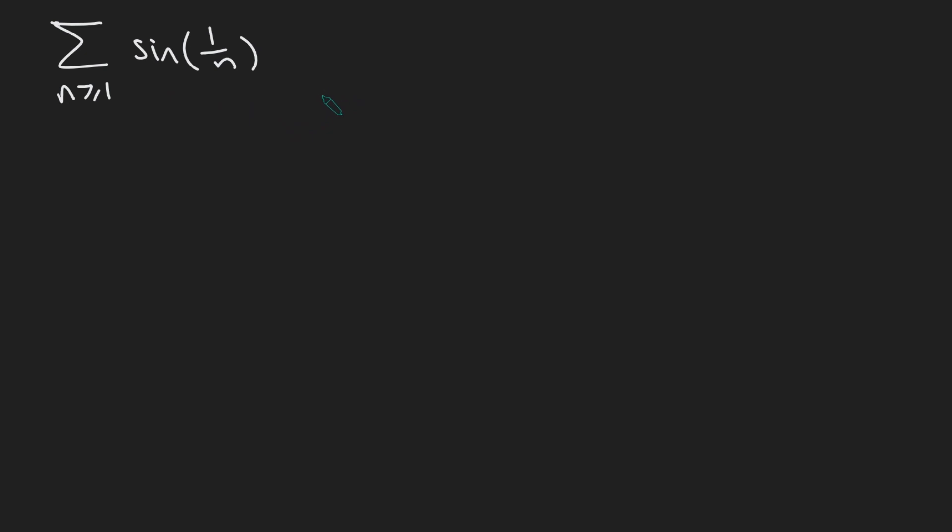And the reason I think this is quite interesting is because this guy here is pretty similar to the sum from n equals 1 to infinity of 1 over n. And that's because sine of x is approximately x for small values of x, and this thing here diverges.